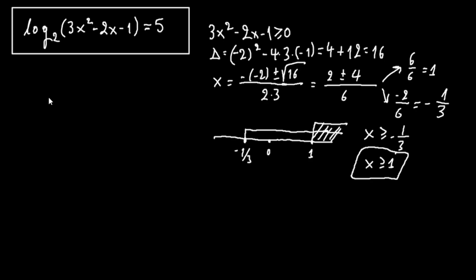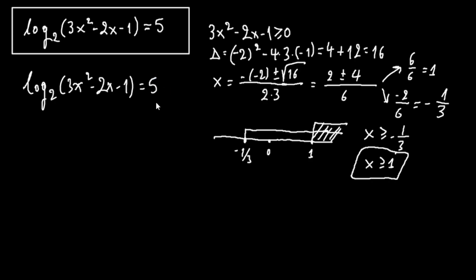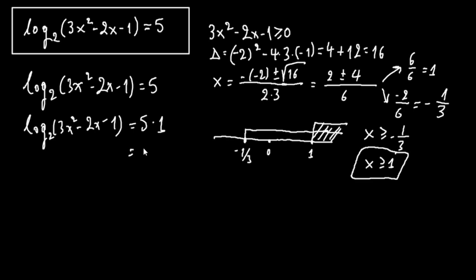Now let's try to solve this. Let's rewrite here: we have the logarithm of 3x squared minus 2x minus 1, base 2, equals 5. To solve this, we'll use a little trick. We can write 5 as 5 times 1. Then, writing 1 in the form of a logarithm, using the same base 2, we can write it as 5 times log base 2 of 2.